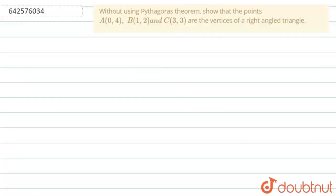Hello students, the question given here is: without using Pythagoras theorem, show that the points A(0,4), B(1,2), and C(3,3) are the vertices of a right-angled triangle.